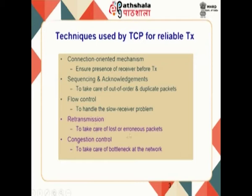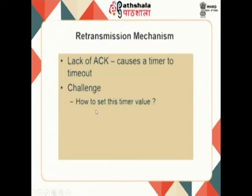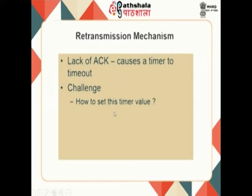Retransmission is essentially to take care of lost or erroneous packets, and congestion control addresses the bottleneck at the network — when too much data is in the network and it cannot handle the amount to be transmitted. The basic retransmission mechanism is: lack of acknowledgement triggers a timer, the timer times out, and then you retransmit the packet. This is the basic mechanism used in any network, including TCP.